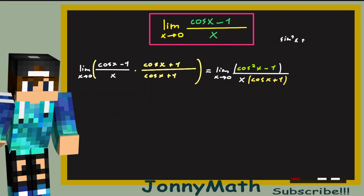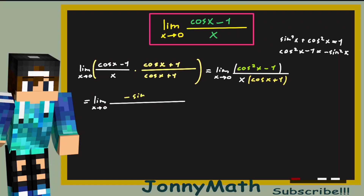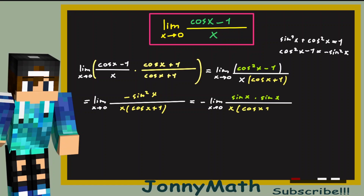Now we can use a very famous trig identity: sine squared of x plus cosine squared of x equals 1. So cosine squared of x minus 1 equals minus sine squared of x. This equals the limit as x goes to 0 of minus sine squared of x, divided by x times cosine of x plus 1.